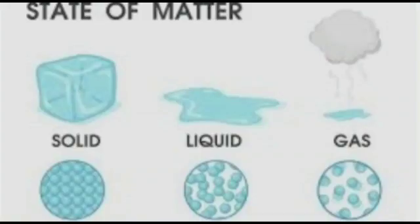What processes occur during the change of state of matter? The processes of dissolving, boiling, melting, freezing, etc. occur when the state of matter changes.